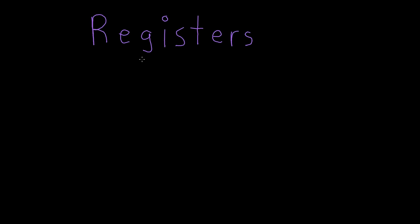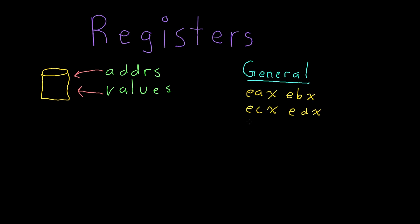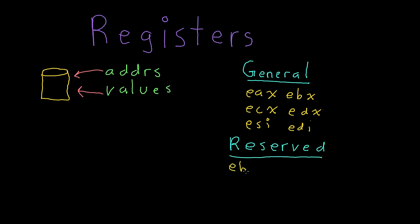Registers are essentially small storage areas in your processor. They can be used to store memory addresses, values, or anything that can be represented with 8 bytes or less. In the x86 architecture, there are six general-purpose registers: EAX, EBX, ECX, EDX, ESI, and EDI. These registers are generally used on an as-needed basis. There are also three registers reserved for specific purposes — EBP, ESP, and EIP — but we will get into those a bit later.